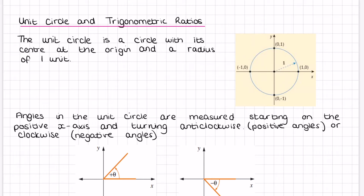The unit circle is a circle with its centre at the origin and a radius of 1. As you can see, that circle drawn is a unit circle, and everywhere on that circle the radius will be 1.